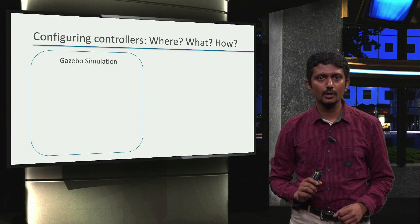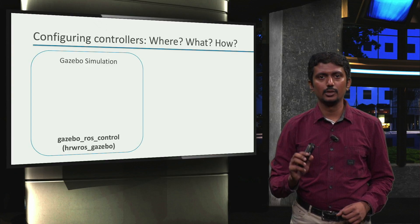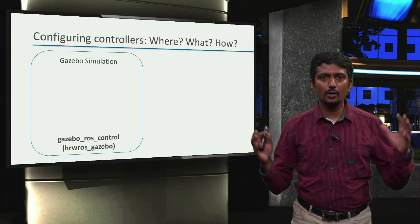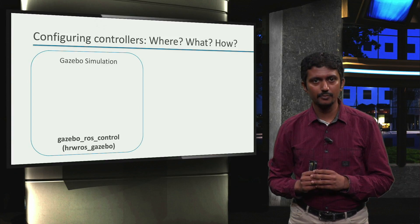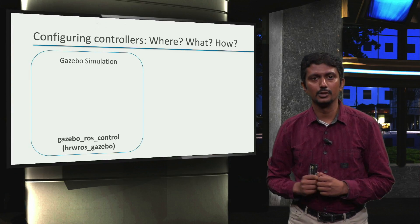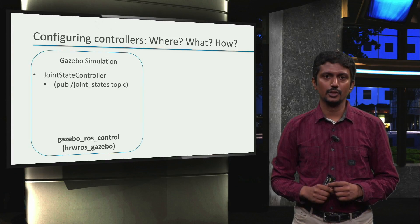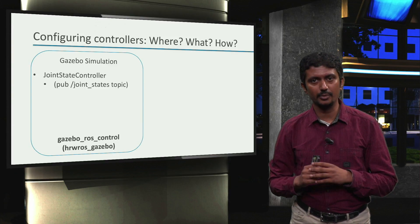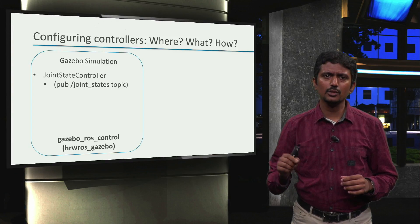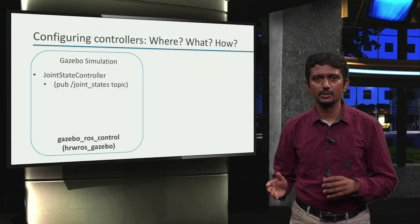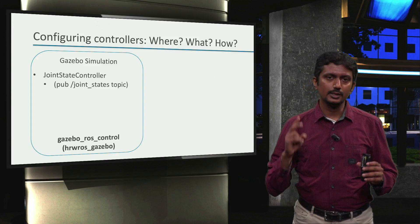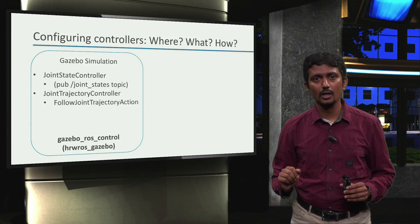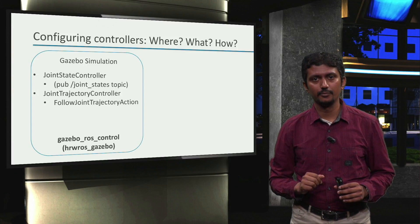We have our Gazebo simulation. This is developed by leveraging the gazebo-ros simulation package that comes with the ROS installation. For this course, we have grouped all that in the hrw-ros-gazebo package and the simulation has been configured to provide a couple of controllers. First, a joint state controller that publishes the current joint values of our robots on the slash joint_states topic — this controller is doing more of the job of a sensor publishing joint values than actually controlling anything. Second, a joint trajectory controller that provides an action server of type follow joint trajectory, which MoveIt will communicate with using action clients.